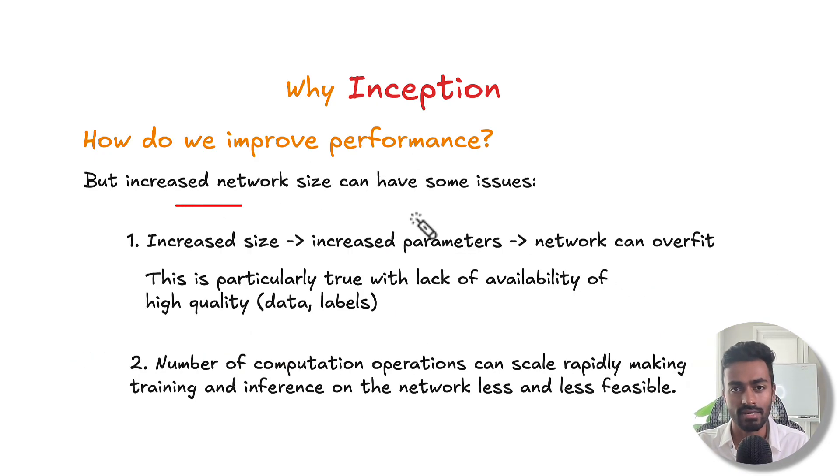But increased network size comes with certain issues. First, increased size implies increased parameters and this means the network can overfit. This is particularly true if there is lack of availability of data and labels. And the second is that the number of computation operations can scale rapidly making training and inference on the network less and less feasible.